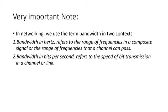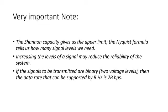It is important to note two different contexts for the term bandwidth. When bandwidth is in hertz, this refers to the range of frequencies in a composite signal or the range of frequencies that a channel can pass. When bandwidth is in bits per second, this refers to the speed of bit transmission in a channel. Also, Shannon's capacity formula gives the theoretical maximum capacity of the channel, while Nyquist's equation tells us how many signal levels are needed. More than two signal levels can be used, but increasing signal levels may reduce the reliability of the communication system.